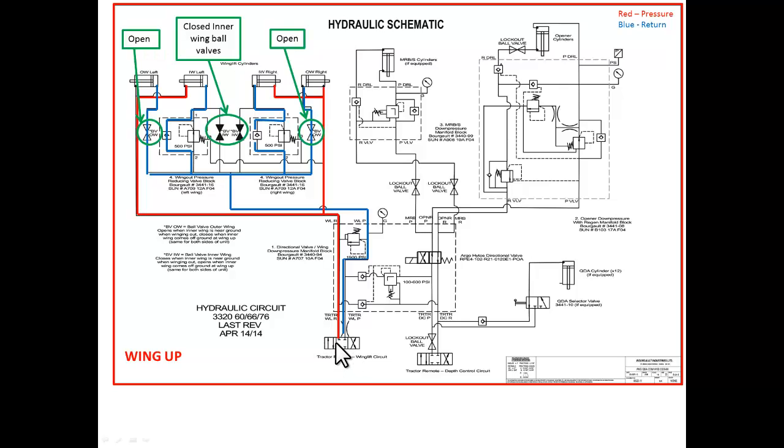So next to wing up the drill we're going to reverse the process. Our pressure side becomes our return side shown in blue on the image and our return side becomes our pressure side. We cycle the tractor remote the opposite way, so we pressure up both the rod ends of the inner and outer wing cylinders on both sides.